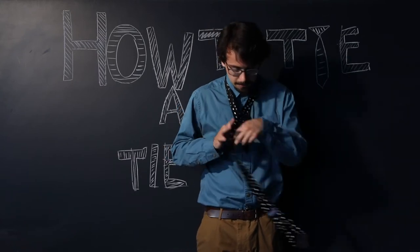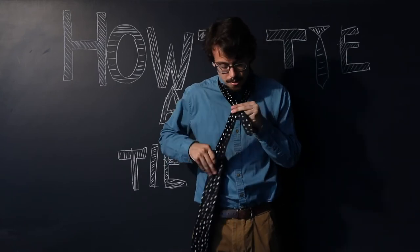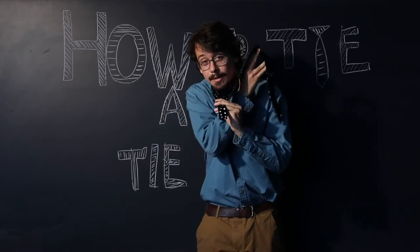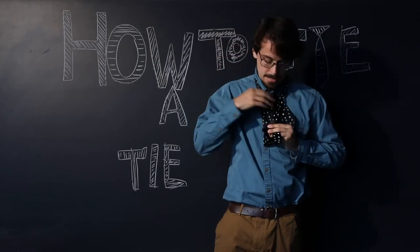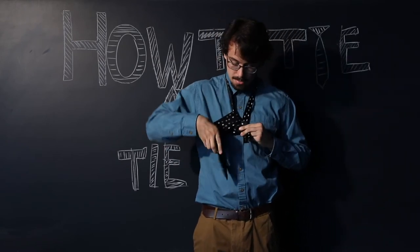Now what we're going to do is cross these over, swing this big end around, and bring it up through the opening in the neck right here.